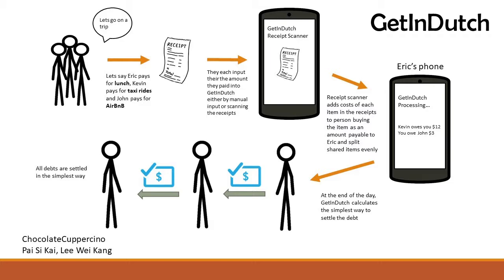Additionally, we hope to implement an image recognition tool for receipts that will help the splitting of bills during meals to be much simpler as well. After scanning the receipt, the tool will be able to split expenditures accordingly and calculate factors such as taxes, GST or service charges and we will be able to split the bill accordingly.